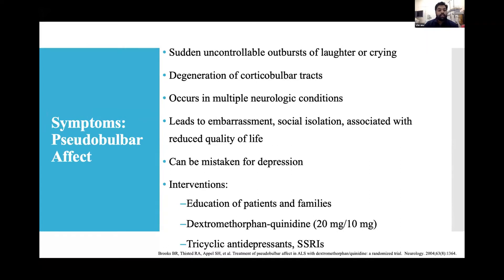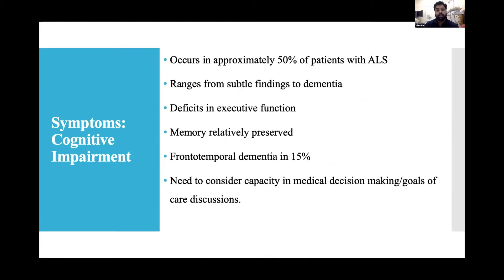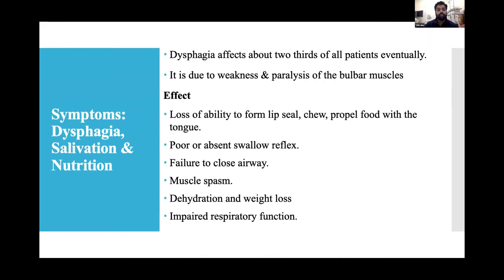Pseudobulbar effect involves sudden uncontrolled outbursts of laughter or crying due to degeneration of the corticobulbar tract. It occurs in multiple neurological conditions leading to embarrassment, social isolation, and reduced quality of life, and can be mistaken for depression. Treatment includes educating patients and families and a trial of dextromethorphan/quinidine 20 mg/10 mg, or tricyclic antidepressants or SSRIs. Cognitive impairment occurs in approximately 50% of ALS patients, ranging from subtle findings to dementia, though memory is relatively preserved.